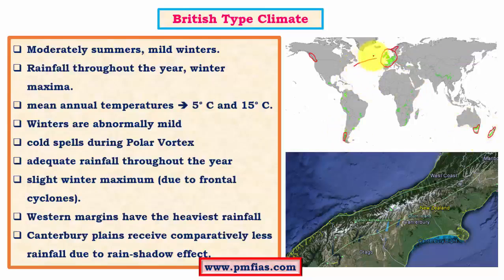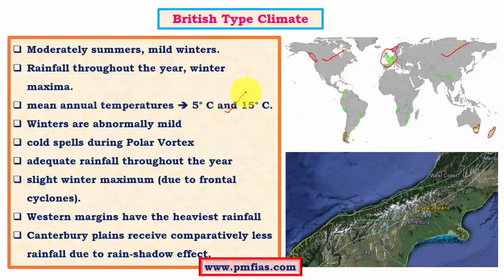These regions — northwestern Europe, parts of southern Chile, and the Tasmanian region — are under the influence of westerlies. Europe is also under the influence of the North Atlantic Drift, a warm current, making temperatures comparatively warmer than interior regions of Siberia, Canada, and other similar regions. Rainfall is throughout the year with winter maxima, and mean annual temperatures vary between 5 degrees and 15 degrees Celsius — a very moderate type of climatic condition. Winters are abnormally mild compared to other regions on the same latitudes.